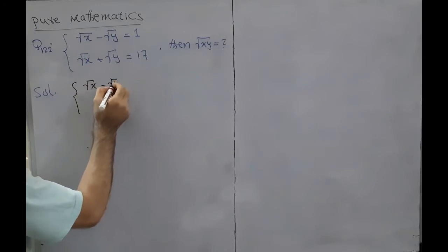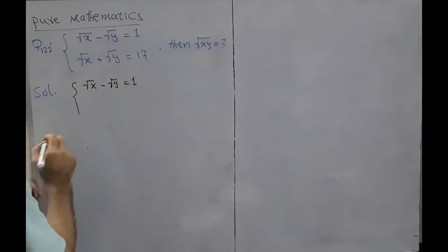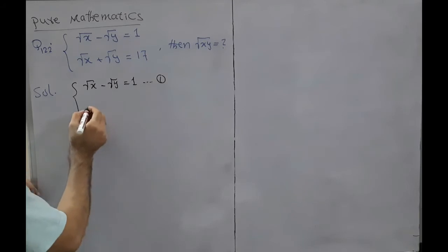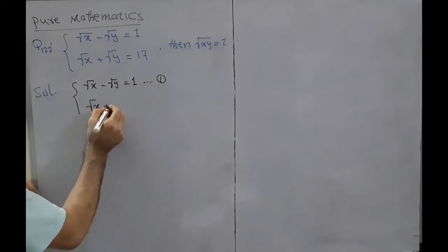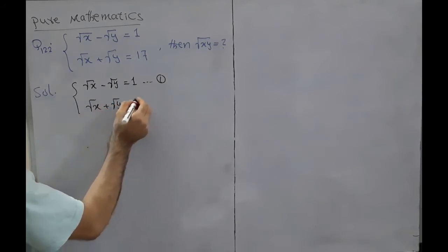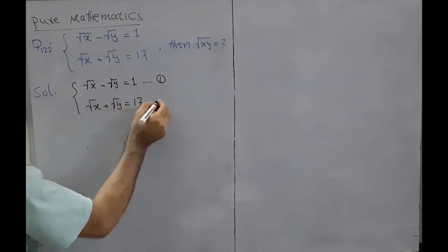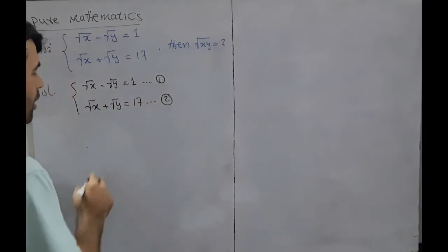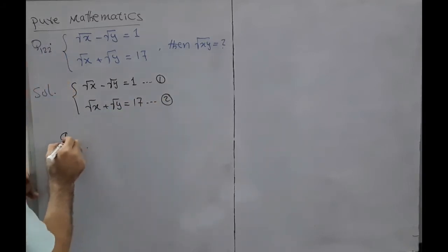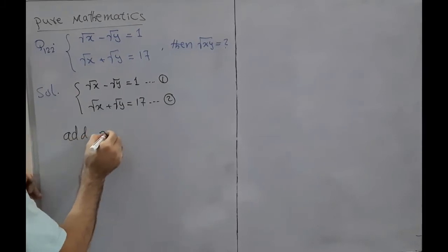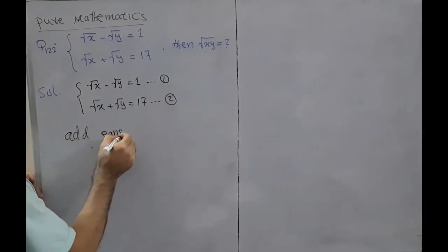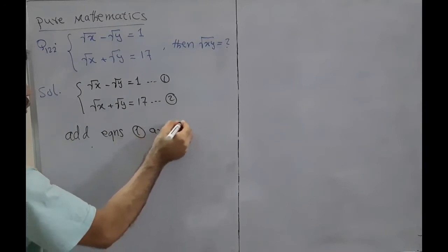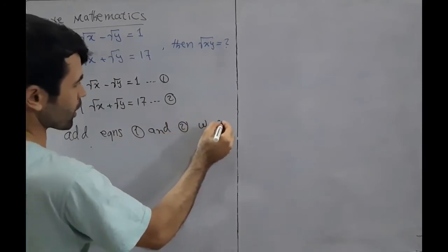Solution: we have square root of x minus square root of y equals 1 — this is equation 1. And square root of x plus square root of y equals 17 — this is equation 2. Now add equations 1 and 2.